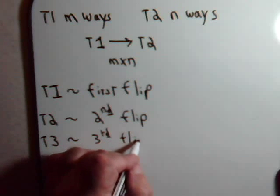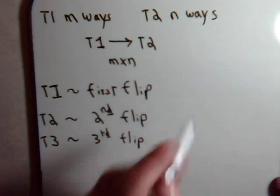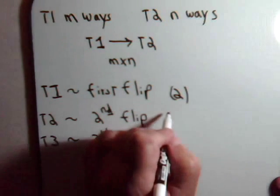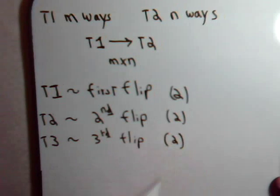Now, each time we flip a coin, obviously, it's going to come out either heads or tails. So the number of ways that we can form the first task is two different ways. Same thing for the second. Same thing for the third.